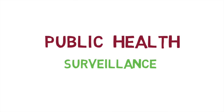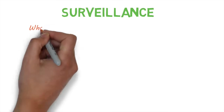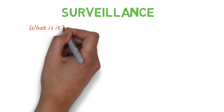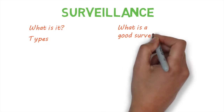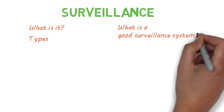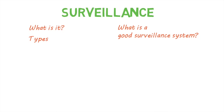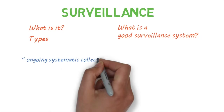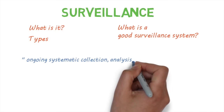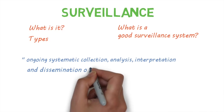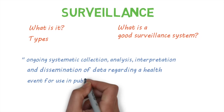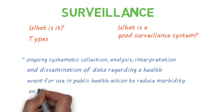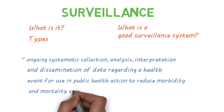Hi and welcome to this quick overview of public health surveillance. We'll take a look at what it is, different types of surveillance, and look at what makes a good surveillance system. Surveillance is defined as the ongoing systematic collection, analysis, interpretation, and dissemination of data regarding a health-related event for use in public health action to reduce morbidity and mortality and to improve health.